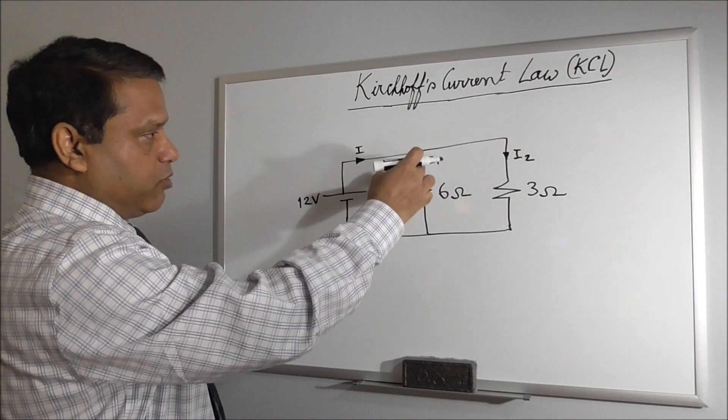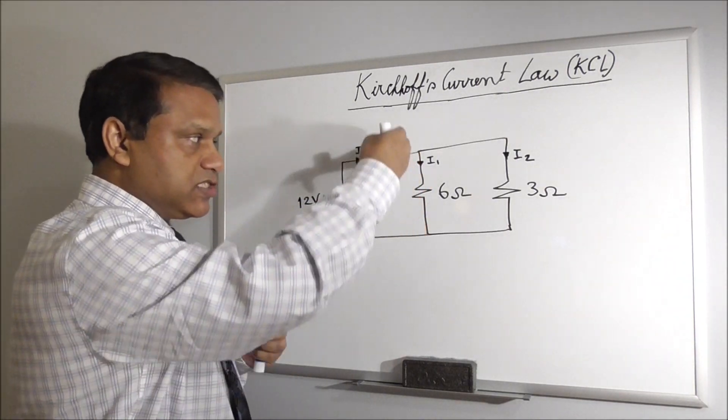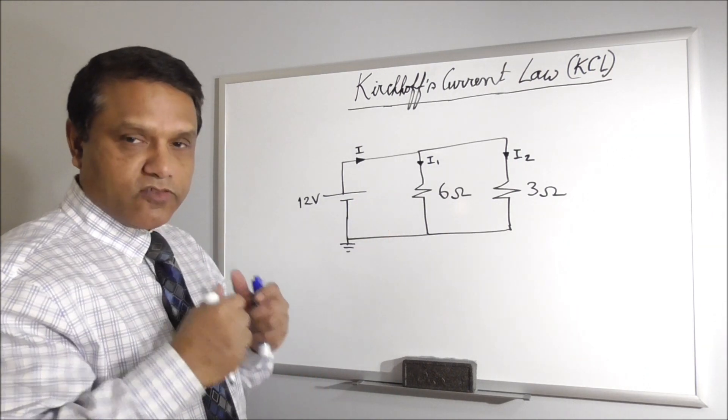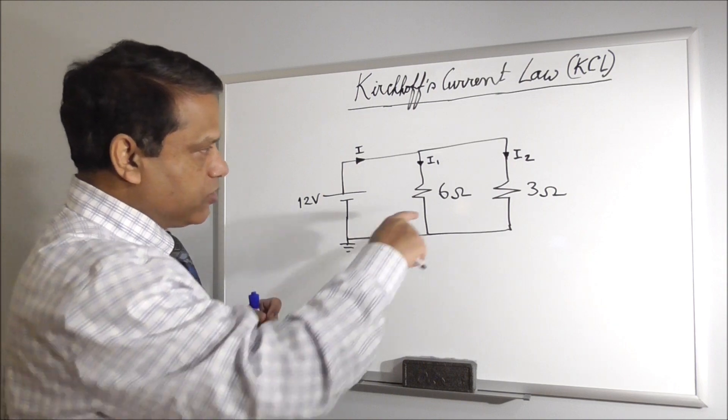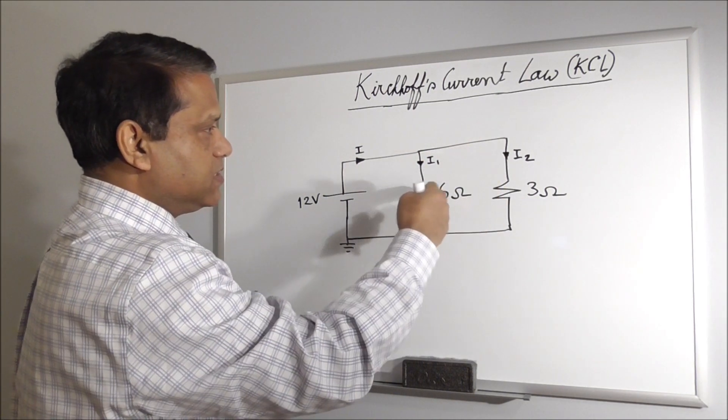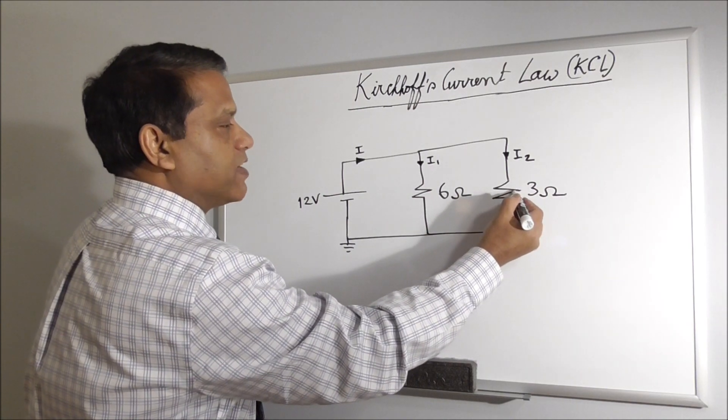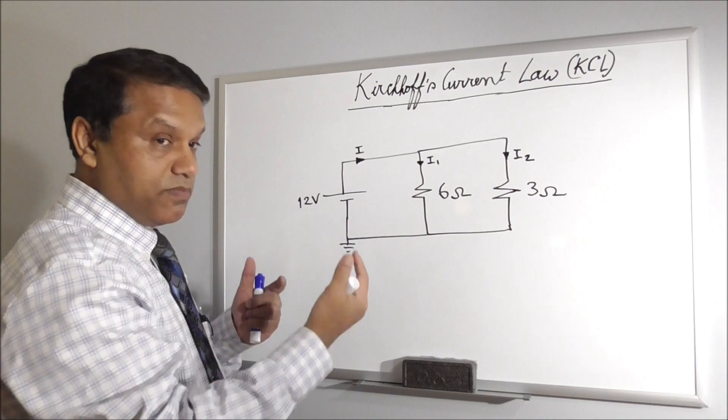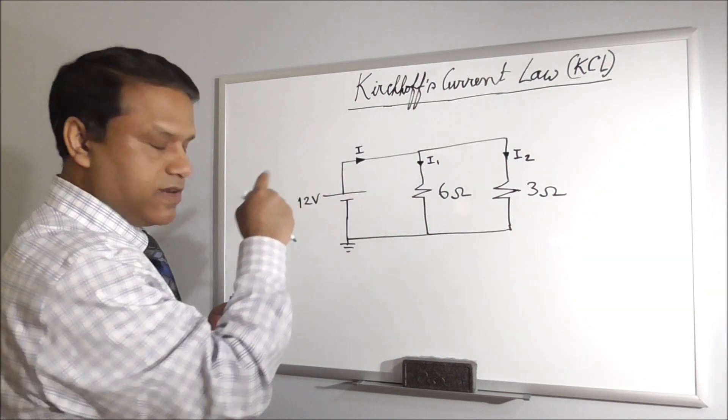So first we want to find I1. So we will apply KVL in a loop which has this branch in it. And we try to find a loop where we know most of the voltages. If you go this way, you see you don't know the voltage here. So that is not a good choice. So the better choice, or actually the only choice in this case, would be this one because we know the voltage here.